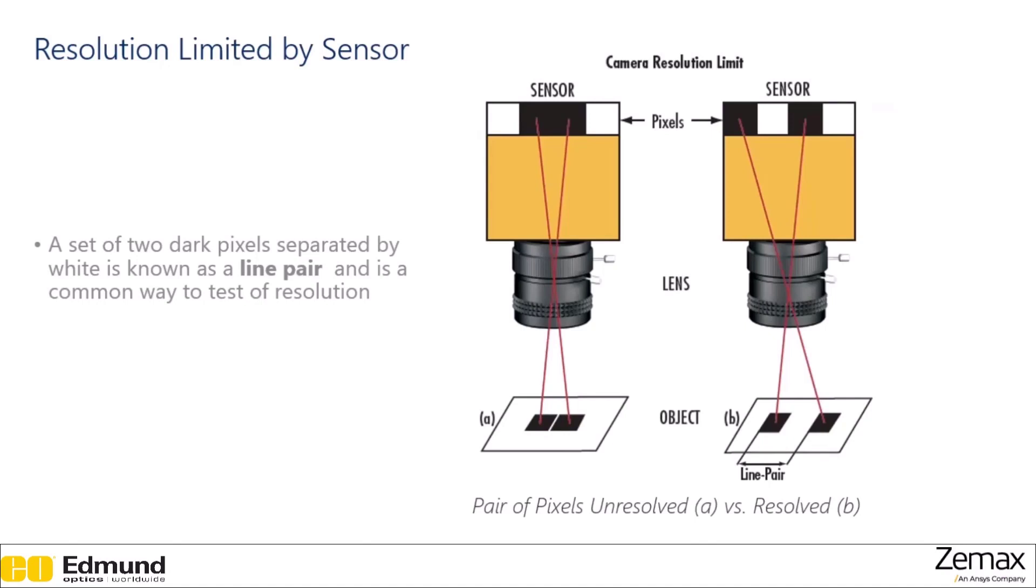However, it is a little more complicated than that, because just because information is on two different pixels doesn't mean that information is distinguishable. So if we look at this case here, this is what we call a line pair. So you have two dark pixels separated by a light area, and in this imaging system here, the information from each of these dark squares ends up on adjacent pixels. However, these are not resolved, because just because the information is on different pixels doesn't mean we can tell where one starts and one stops. We need some separation between them.